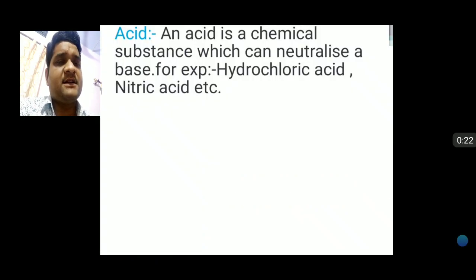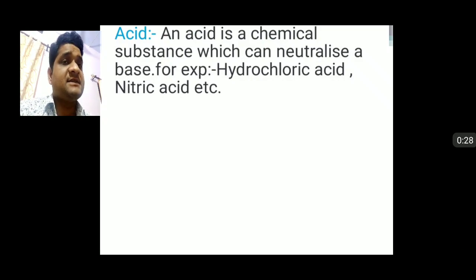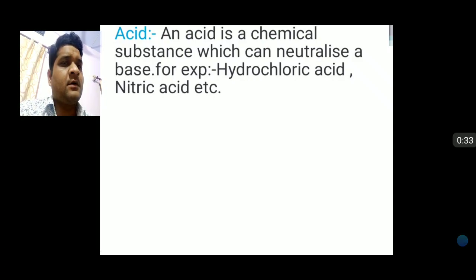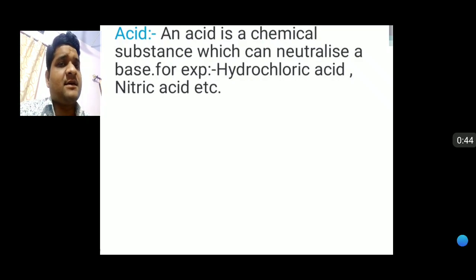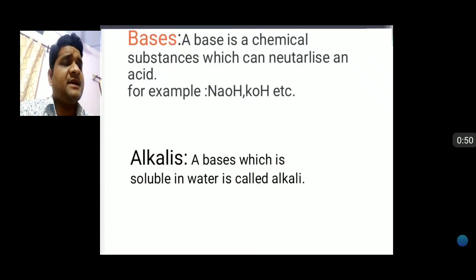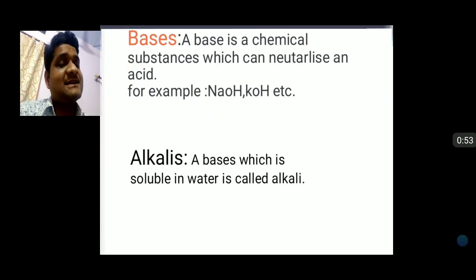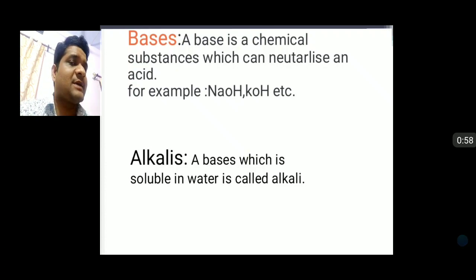What is the meaning of acid? An acid is a chemical substance which can neutralize a base. For example, hydrochloric acid and nitric acid are examples of acids. A base is a chemical substance which can neutralize an acid, for example NaOH (sodium hydroxide) and KOH (potassium hydroxide).